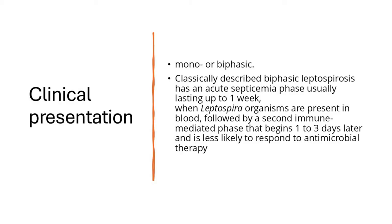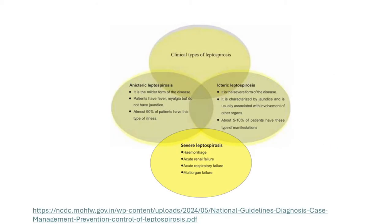Leptospirosis is typically described as biphasic. It starts with an acute septicemic phase lasting about one week, where leptospira may be found in the blood or tissues, followed by an immune phase one to three days later — during which antibiotics are not effective. Clinical types include anicteric (the commonest, milder form with fever and myalgia but no jaundice), icteric or Weil's disease (with jaundice and multi-organ involvement), and severe (with pulmonary hemorrhage, acute renal failure, multi-organ failure, and ARDS).